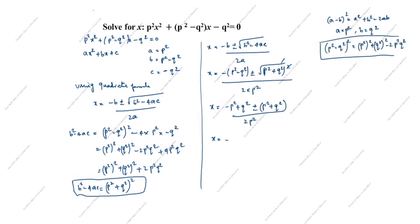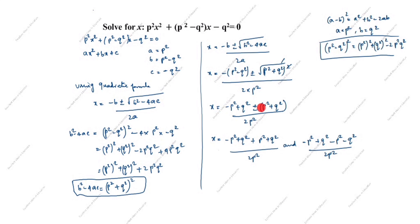Taking the positive case: x = (-p² + q² + p² + q²) / 2p². Here -p² and +p² cancel. We get 2q² / 2p², and the 2s cancel, giving the first answer: x = q²/p².